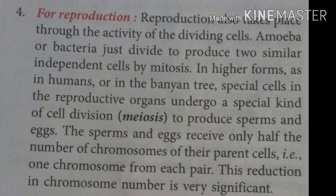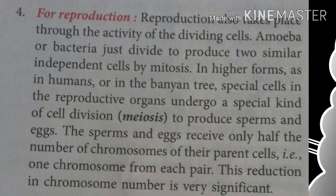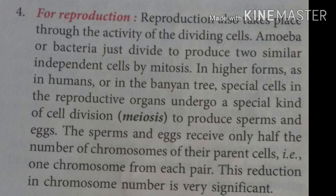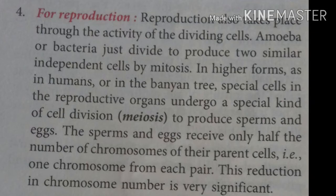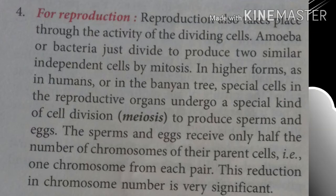Meiosis is a division of reproductive cells, which are also called gametes or sex cells. For example, sperm and egg formation involves meiosis. In meiosis, the parent cell produces 4 daughter cells and the chromosome number becomes half in the daughter cells compared to parent cells.